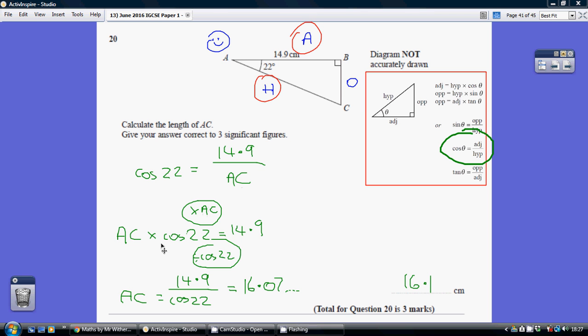And then to get AC on its own, I need to undo this multiplying by cos 22 by dividing by cos 22, so I'm left with AC being 14.9 divided by cos 22. Putting that into my calculator, I get 16.07 dot dot dot, and to three significant figures—to three digits—that's 16.1.